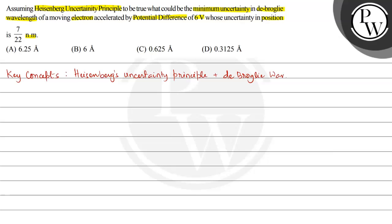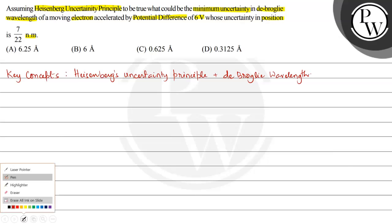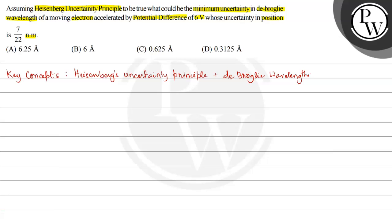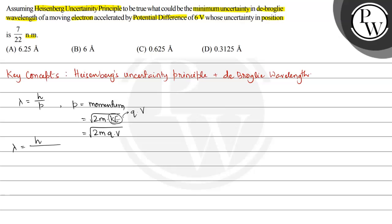Firstly, the de Broglie wavelength is given by λ = h/p, where p is momentum. The momentum p = √(2m·KE). Since a charged particle moves through a potential difference, KE = QV. So the momentum becomes p = √(2mQV), and therefore λ = h/√(2mQV).